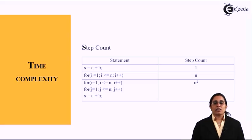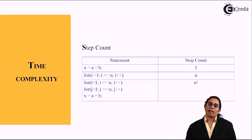For the third one that we are seeing, it is for i equals 1 to n and for j equals 1 to n, the step count is n squared.